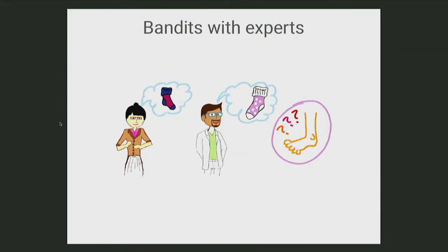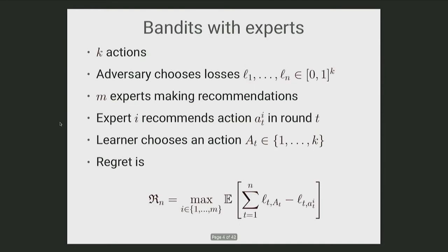The first one I want to talk about is bandits with experts. This is the problem: you have a bunch of experts all recommending which socks you should wear in the morning — a difficult decision. Every morning you have to make a decision, and you have a number of experts, maybe a really large number, recommending what you should do. You want to use their advice as effectively as possible and suffer low regret — not with respect to the best action in hindsight, but with respect to the best expert in hindsight.